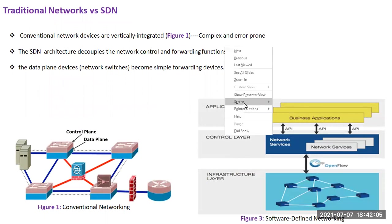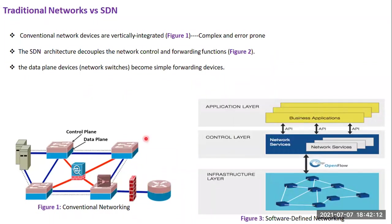In Figure 1, we can see a traditional IP network, which is mostly applied today. We can find a massive amount of routers and switches, all distributed through the whole network. To access any device and apply routing policies or configurations, we must access each device individually. This is because the control plane, responsible for decision-making, and the data plane, responsible for forwarding traffic between source and destination, are integrated in the same device — increasing management difficulty and error-proneness.